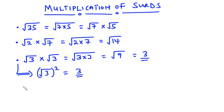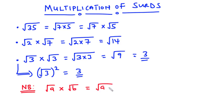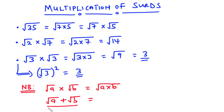Now before we solve more examples, let's take note of something very important. If you have the square root of a multiplying the square root of b, then that is equal to the square root of a times b. However, if you have the square root of a plus the square root of b, you cannot add these two terms because the value under the square root is not the same. So you have to leave it as it is, because this expression is already in simplified form.